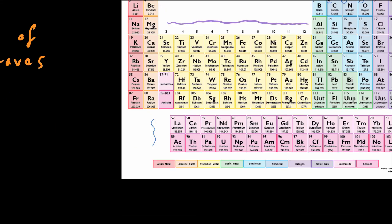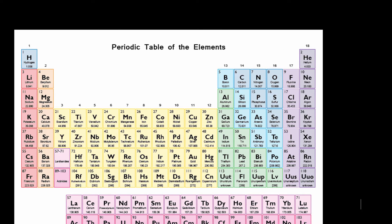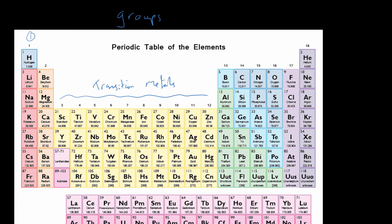Now let's look at the organisation of the modern periodic table. The elements are organised into groups — the columns. We ignore the transition metals in the middle, as they aren't found in traditional groups. The remaining columns are labelled group one, group two, then skipping the transition metals, groups three through seven, and finally group eight, sometimes called group zero. Either is correct.